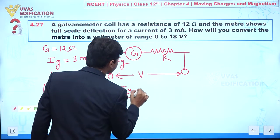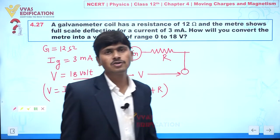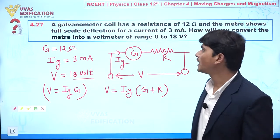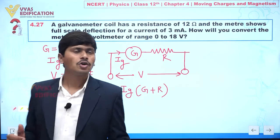From here we can write V equal to Ig times capital G plus capital R. If I connect a very high resistance in series, then we can easily convert. Our objective in this question is to calculate the value of resistance capital R.